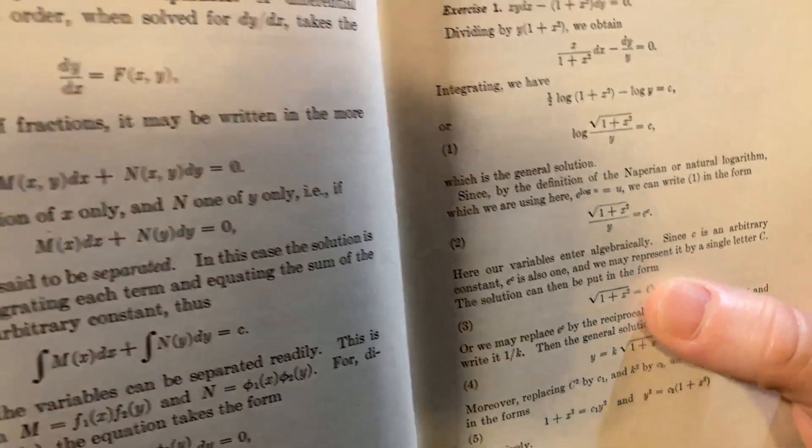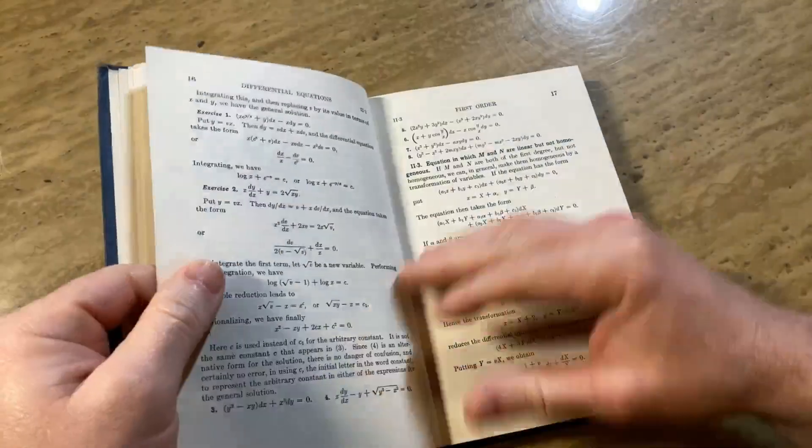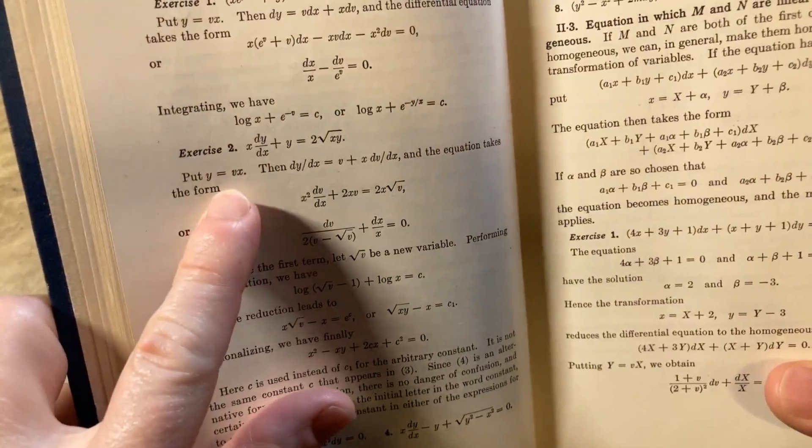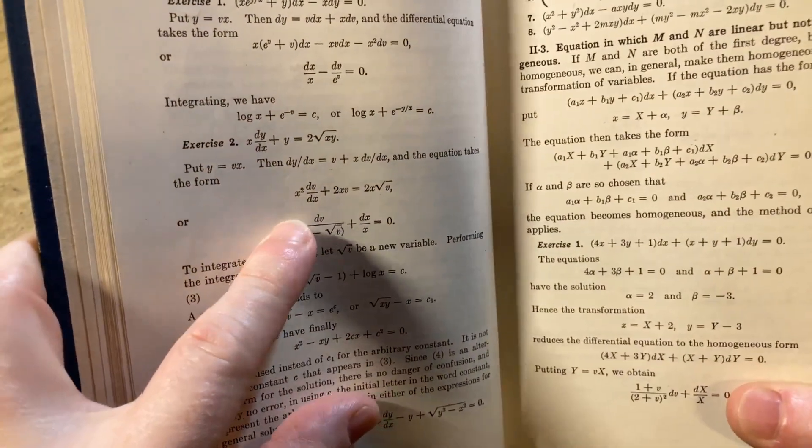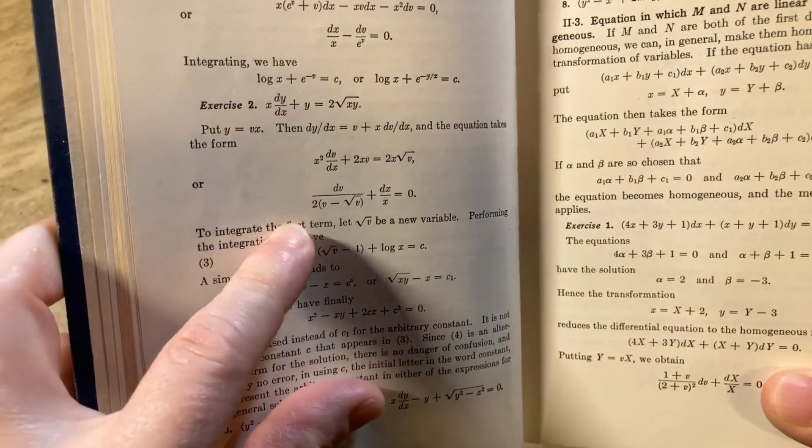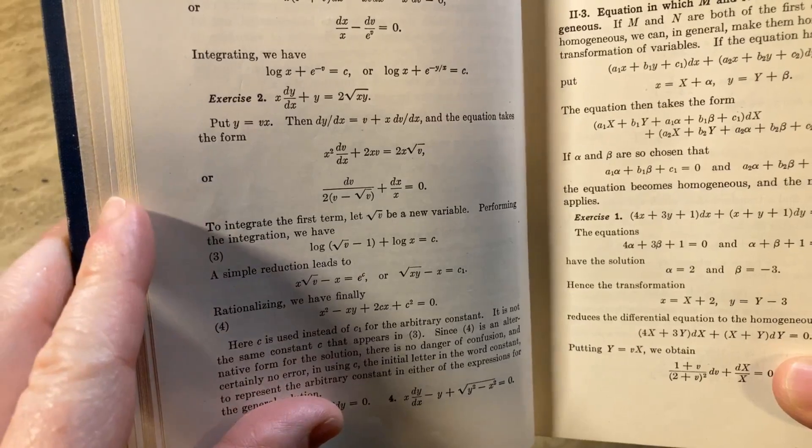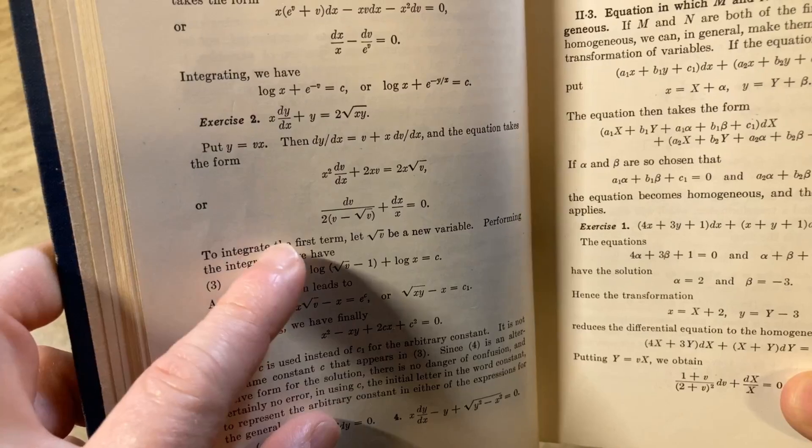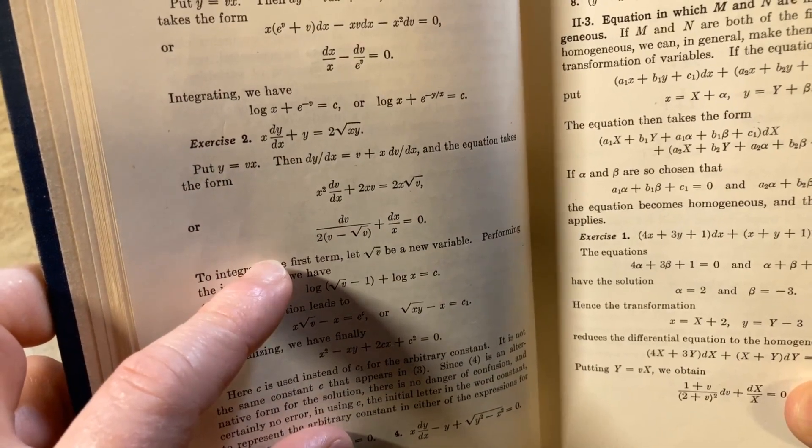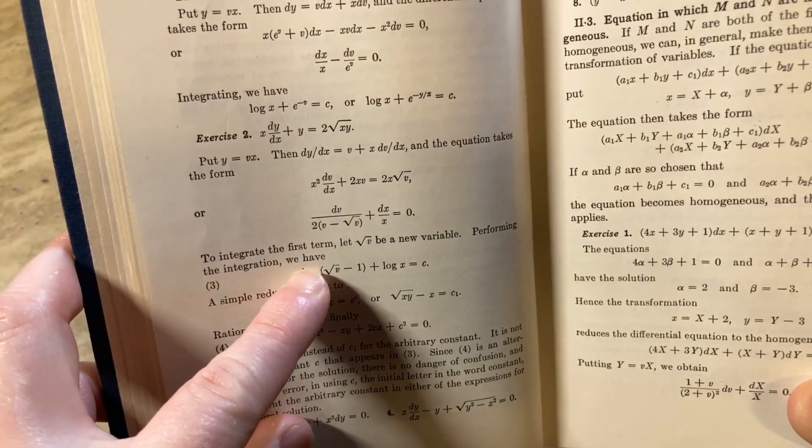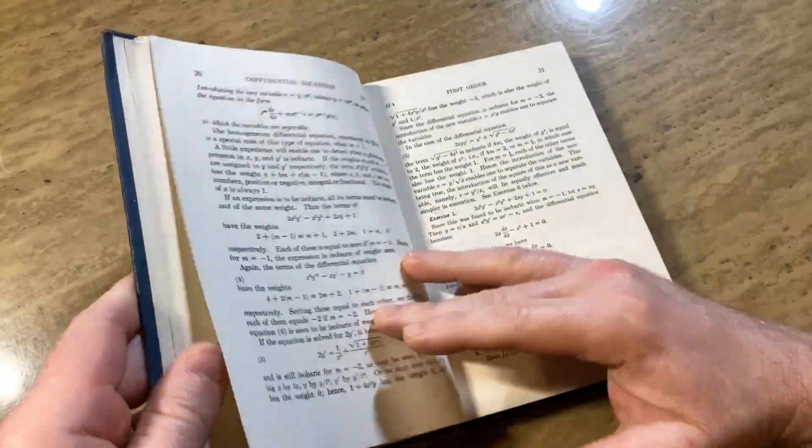They have some stuff going on. Here's another example. They write it this way and they make a substitution. And then they integrate both sides. They go from here to here. And they skip a lot of steps here. They're doing some integration here. To integrate the first term, let the square to V be the new variable. Performing integration we have. So they skip a lot of the steps in this book. So it's pretty terse.